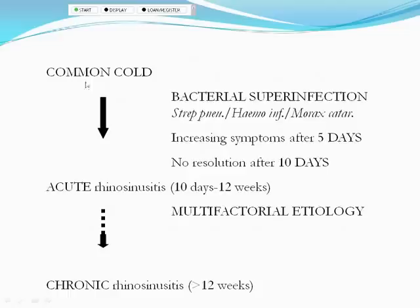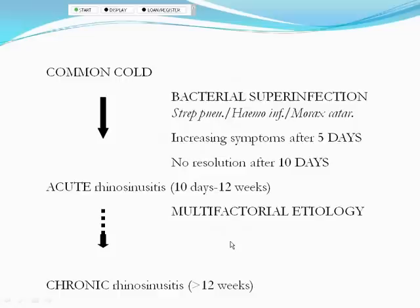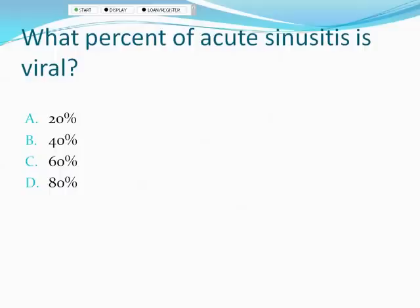Acute rhinosinusitis is most commonly triggered by a common cold — rhinovirus, paramyxovirus, or influenza. The patient starts with viral symptoms, begins to improve, but then acutely worsens due to bacterial superinfection with the usual suspects. If symptoms don't resolve after 10 days, suspicion for bacterial sinusitis is very high. If symptoms persist or recur beyond 12 weeks, you're looking at chronic rhinosinusitis — characterized by a TH1-driven chronic inflammatory process with interferon-gamma, TNF-alpha, and TGF-beta.